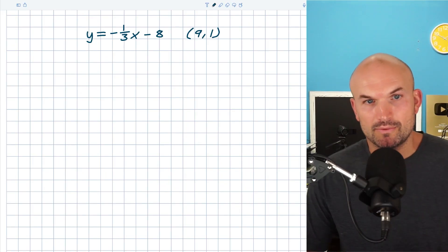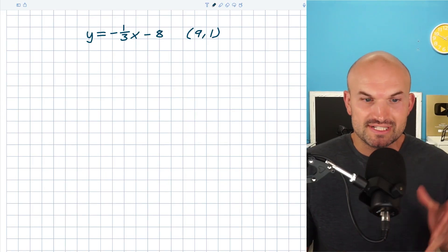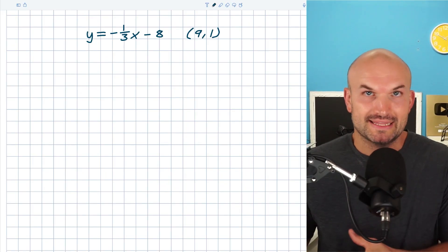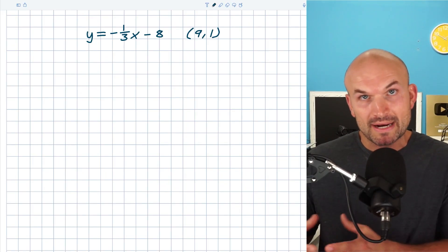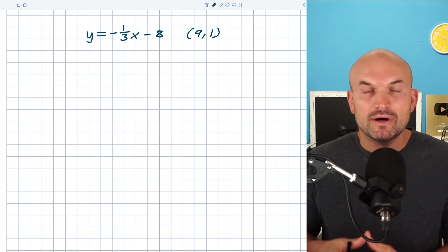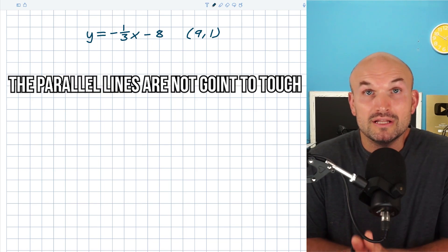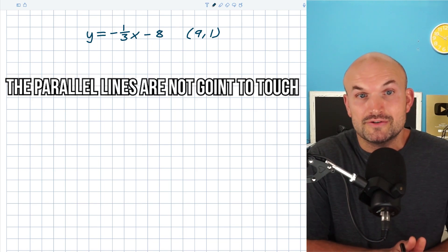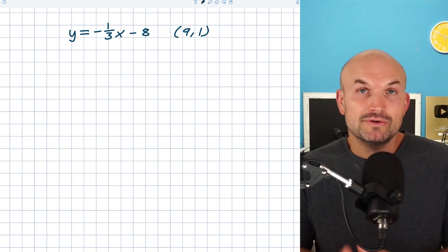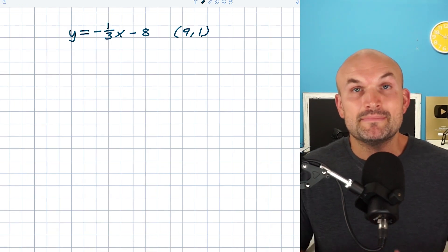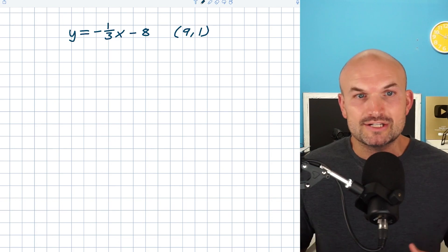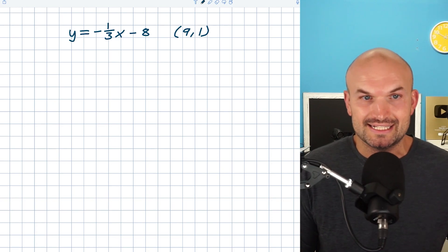It's really important when you first see a problem like this and you see that word 'parallel' that you understand that parallel lines are not going to touch. And if two lines are not going to touch, that means their slope is going to be exactly the same.